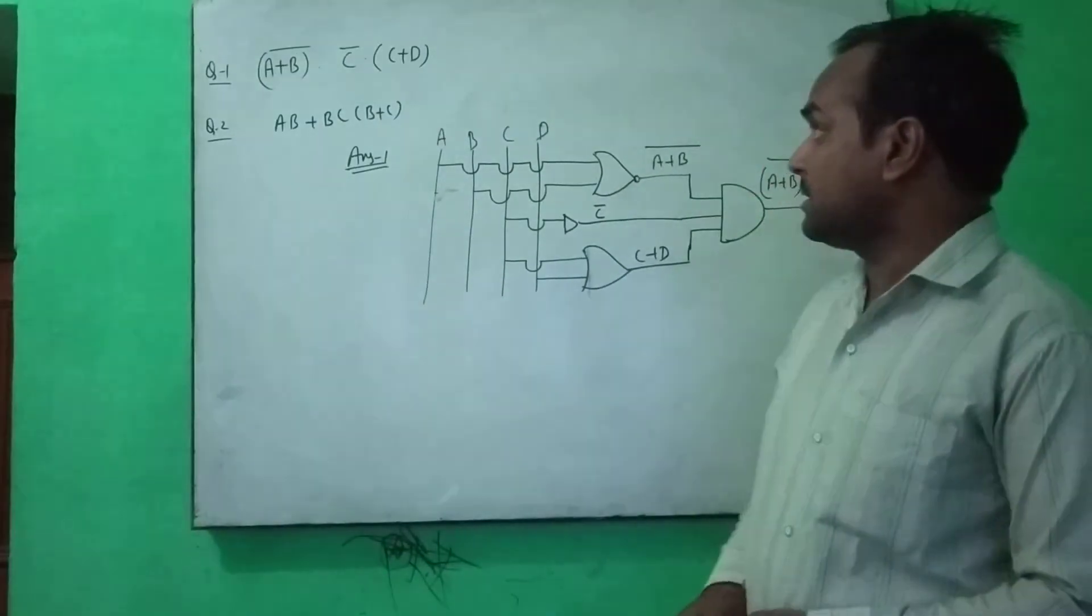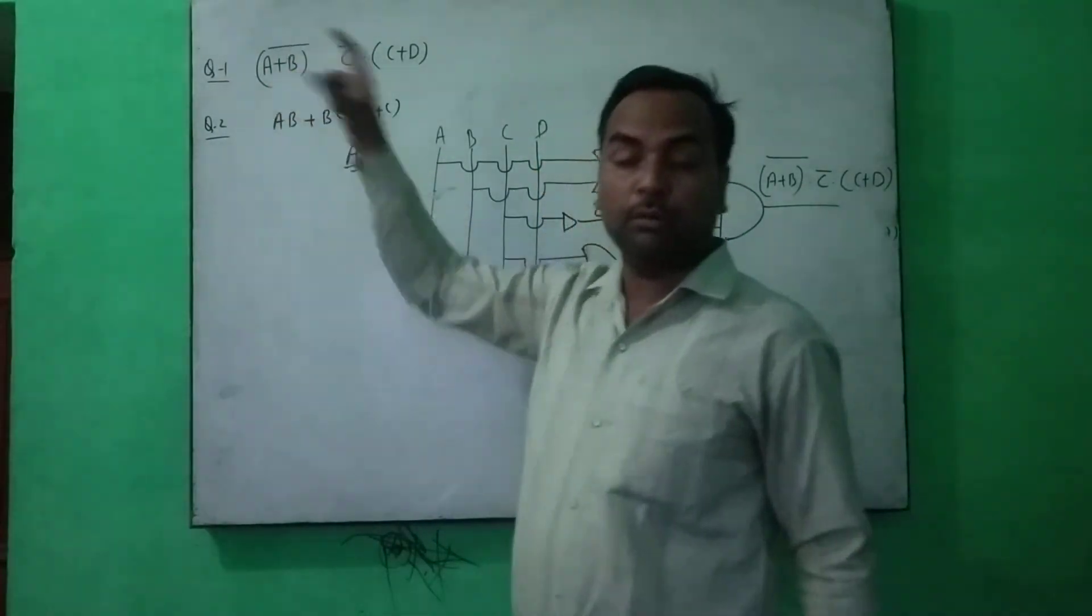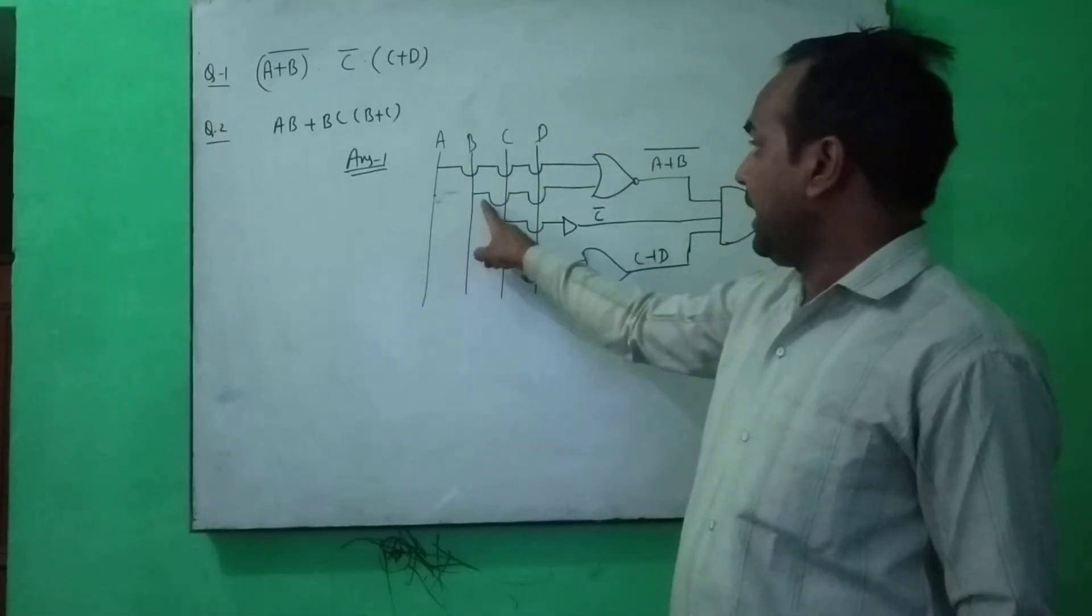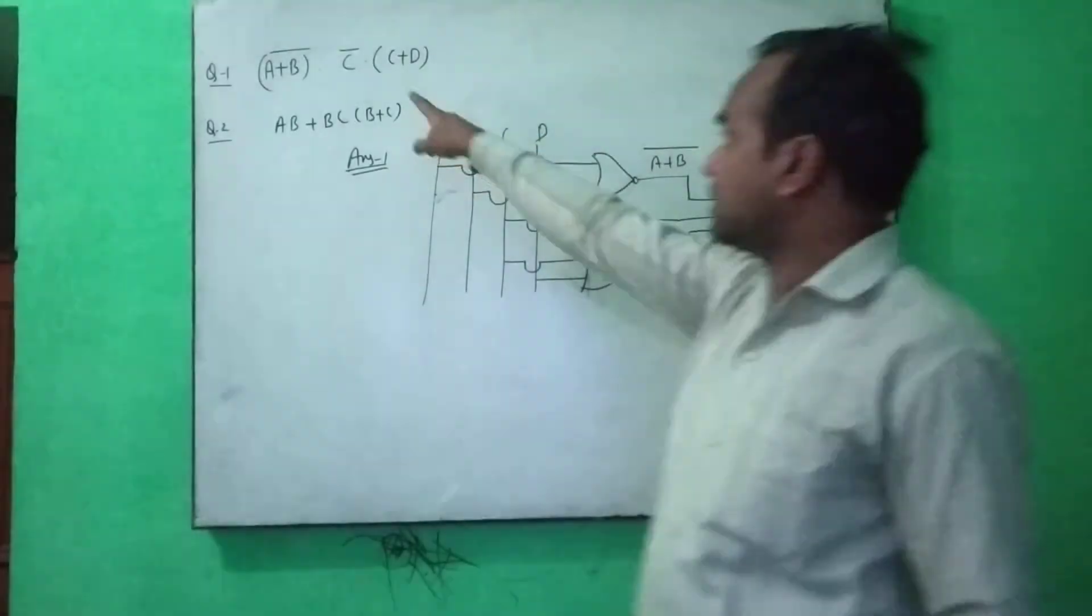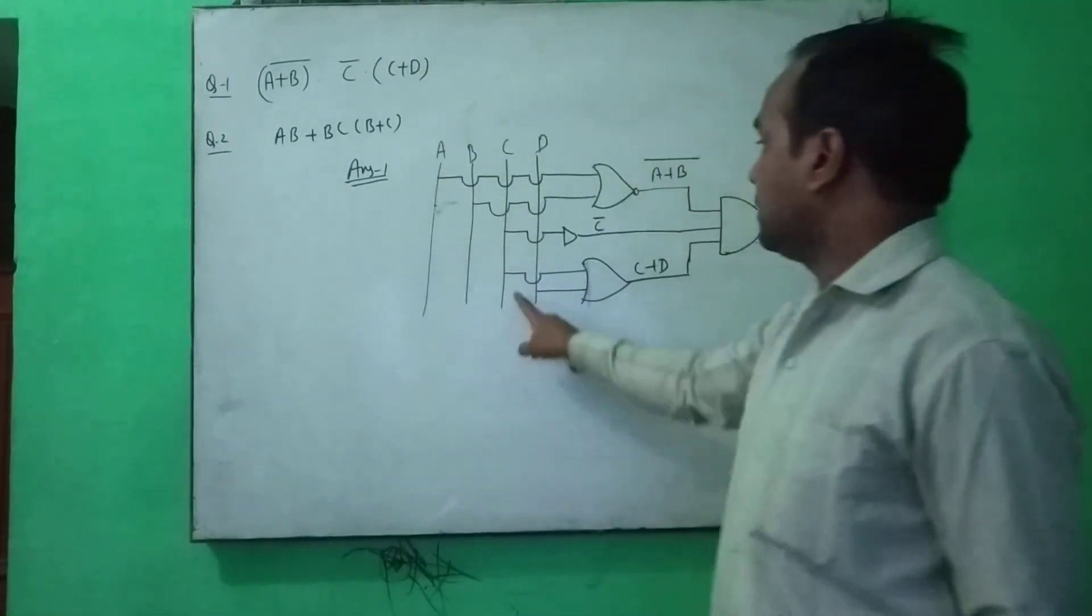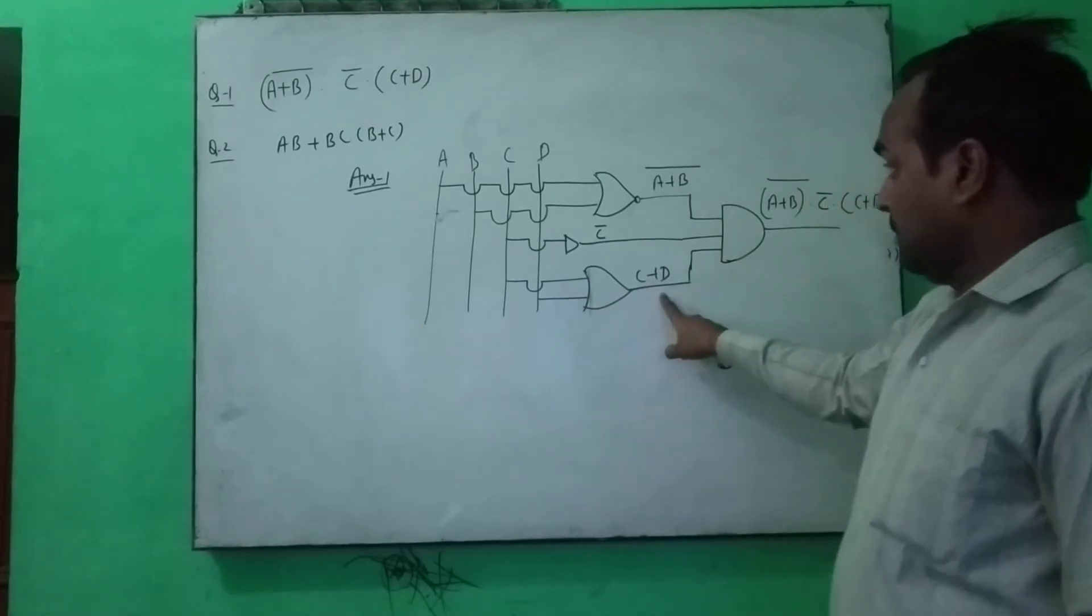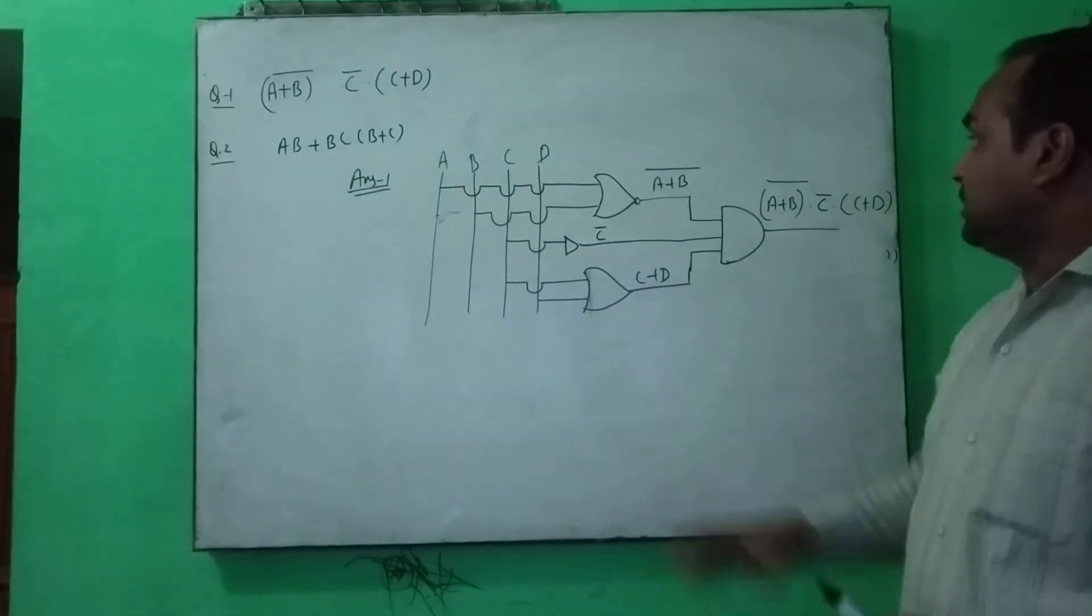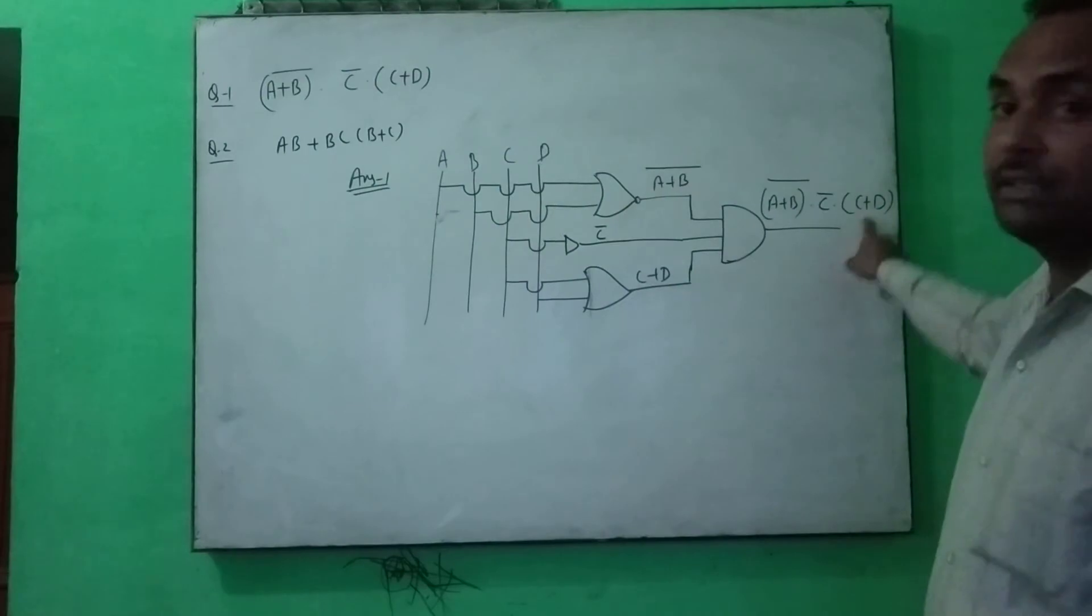I am repeating this. A plus B, A and B you have to perform NOR operation. So I am taking the line from A and B and perform NOR operation like this. After that, C bar. So C bar will be here. And finally, C plus D. This is the line of C and this is the line of D. C plus D. So three outputs I am getting here. And after these three outputs will work as an input for this gate. Finally we get this output.